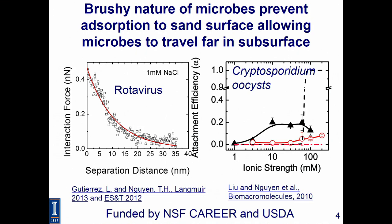On the other graph, I show attachment efficiency as a function of ionic strength. Attachment efficiency is the probability that a microbe will stick to another surface — if it equals one, then any virus or microbe, in this case Cryptosporidium, that gets close to the sand surface will stick with 100% probability. However, in groundwater the ionic strength is very small, so the probability that a Cryptosporidium particle sticks to the sand surface is less than 10%. This microscopic-scale data demonstrates the scientific reason for the high mobility of pathogens in the subsurface environment.